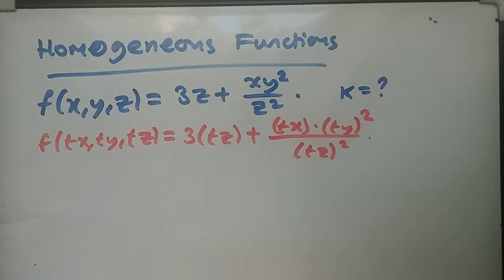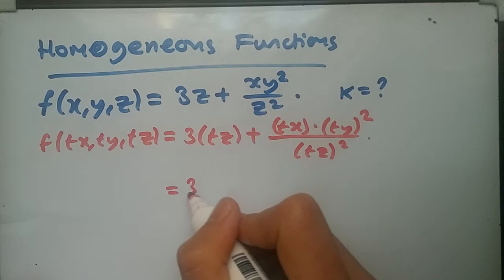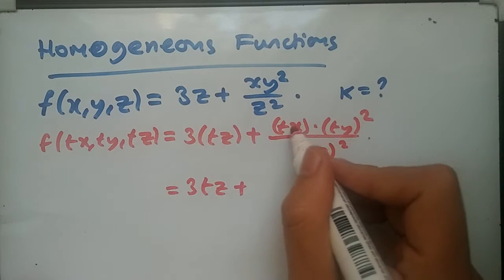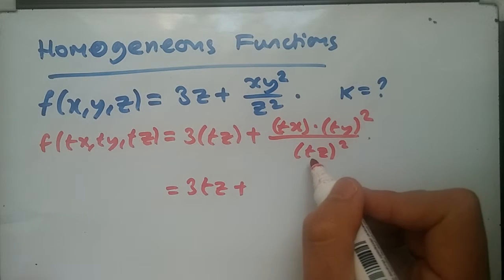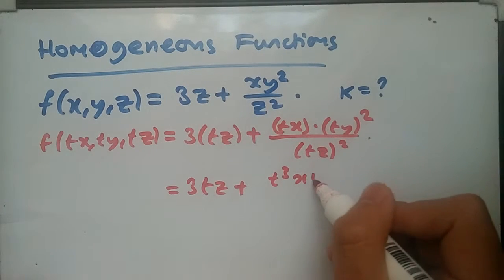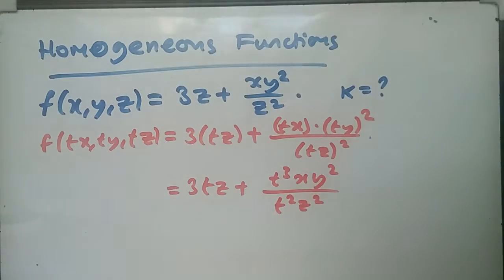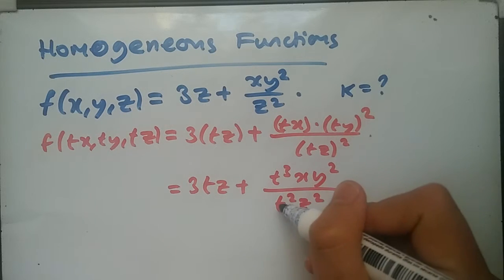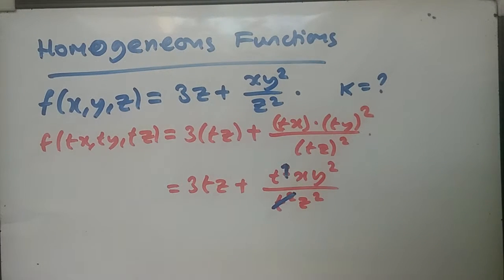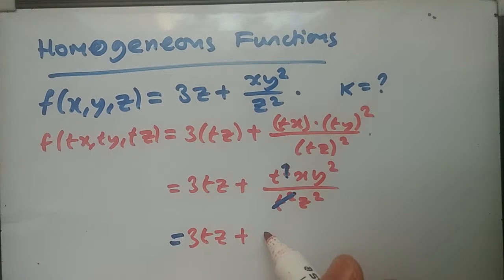Okay, so it looks quite straightforward. So remember we have to factorize t and it should have a power assigned to it. Multiplying all of this out, we should have 3tz plus t times t squared over t squared. So we're going to have t cubed times x times y squared over t squared times z squared. Now canceling our terms, t squared and t cubed, this will be cancelled and this will be changed to power 1. So we'll just have 3tz plus t times xy squared over z squared.